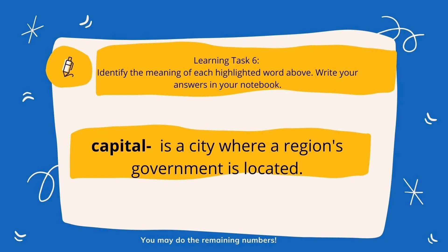For learning task 6, identify the meaning of each highlighted word from task 5 and write your answers in your notebook. For example, our word in number 4 is 'capital.' The meaning of capital is a city where a region's government is located. For each item, give the meaning of each highlighted word.